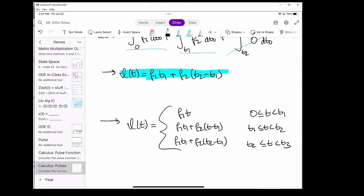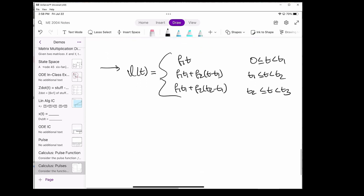Just like we did for the first part, we can express the entire I of t in terms of the unit step function.